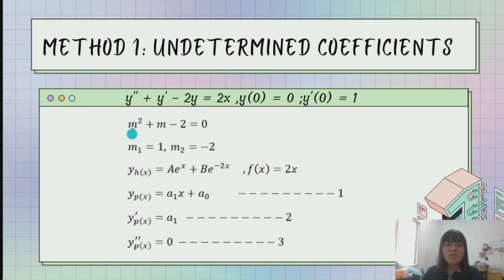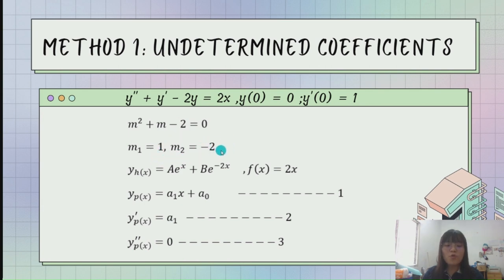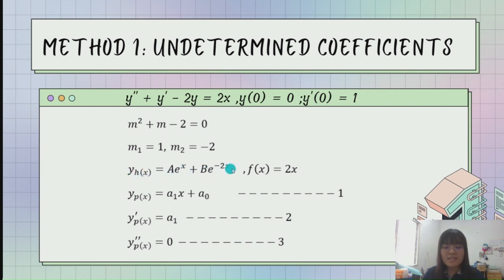So the first step, we need to change the equation into the characteristic equation, so we get m squared plus m minus 2 equals 0. We find the roots of this equation and get 1 and minus 2. These two roots are different, so this is the real and distinct case. Based on Table 2.1, we get yh(x) equal to ae^x plus be^(minus 2x).